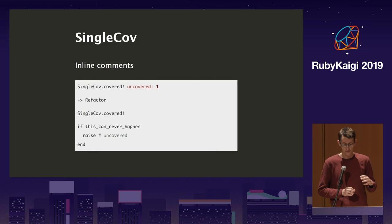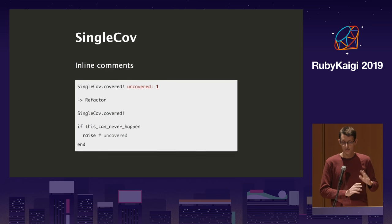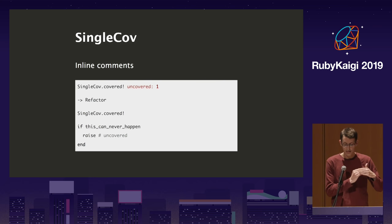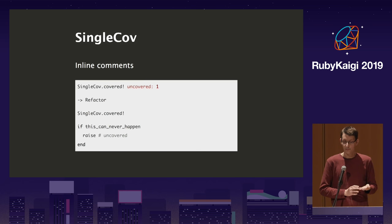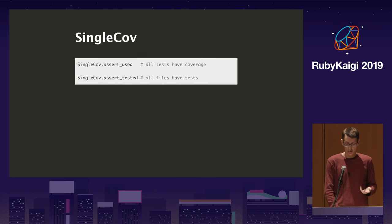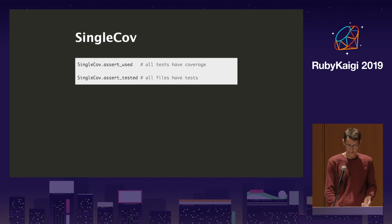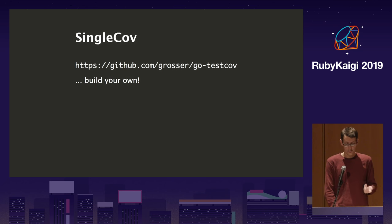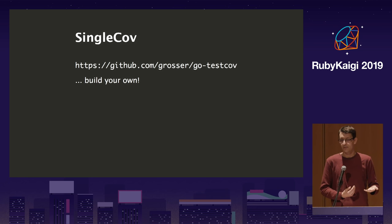There are two ways of configuring what's allowed uncovered: you can just have the uncovered count as a catch-all, or you can add an `# uncovered` comment to specific lines, which makes it easier for PR review to see what's not covered and why. SingleCov also includes helpers that let you say you want coverage for all files and tests for all files. There's also a Go version — it's a very simple concept of run this file, check coverage, fail if it's not there — so you're welcome to build it for any other language.